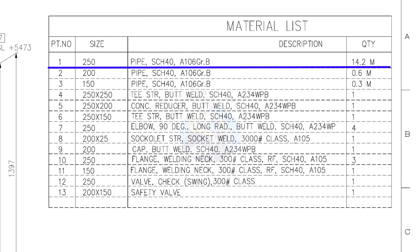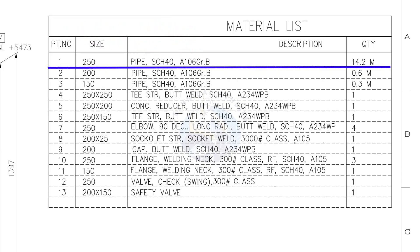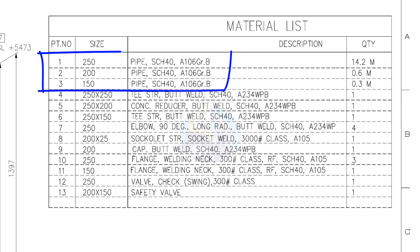Let us try another example. What is the inch size of the 200 NB pipe? Divide 200 by 25. The answer is 8 inches. Parts number 1 to 3 are all schedule 40 pipes.